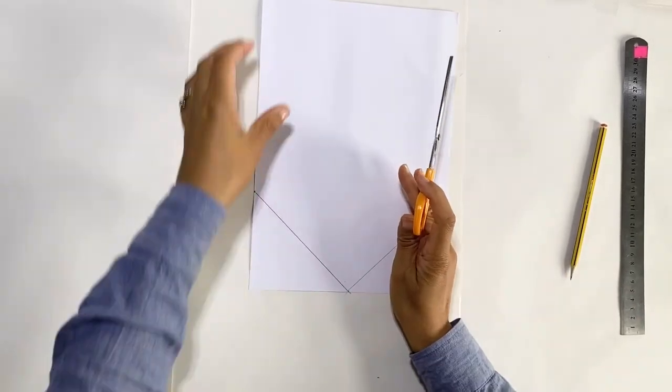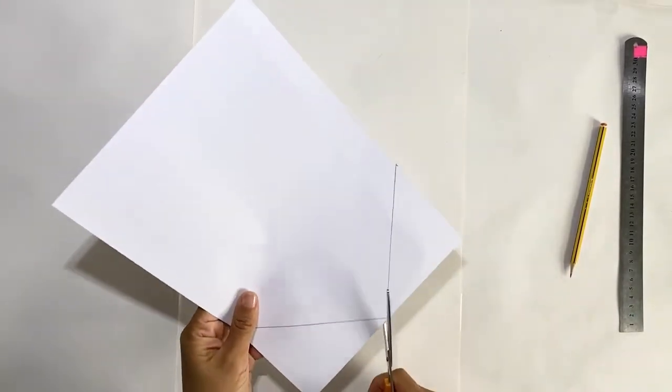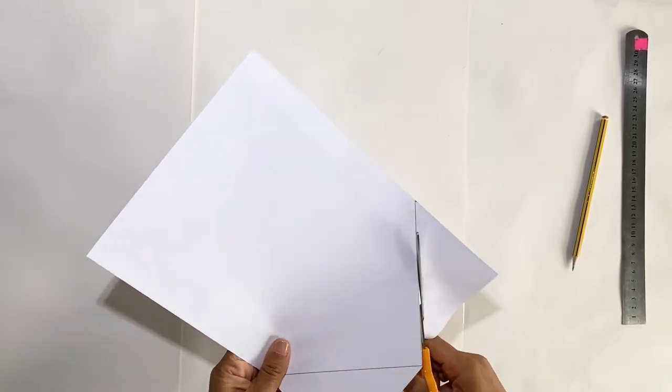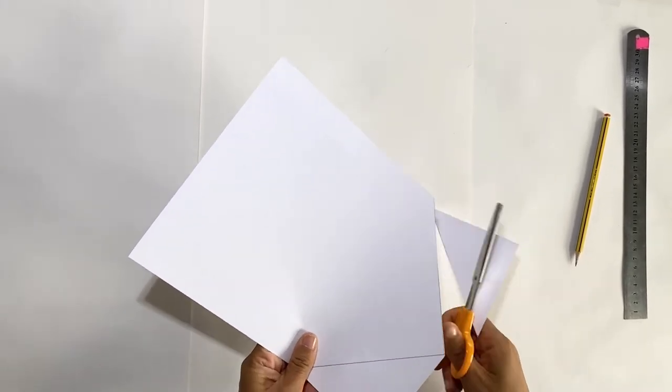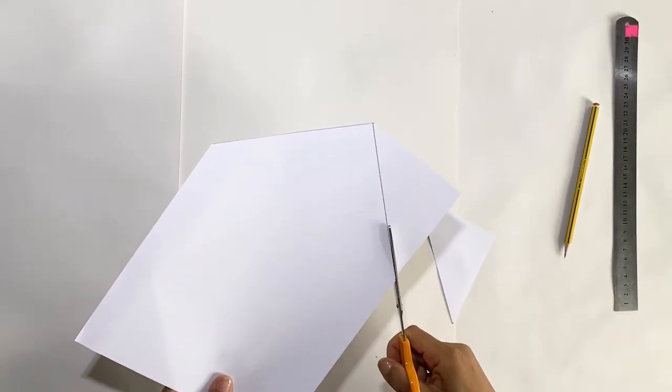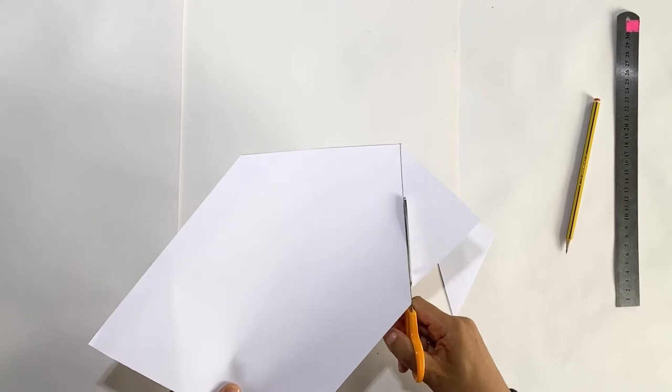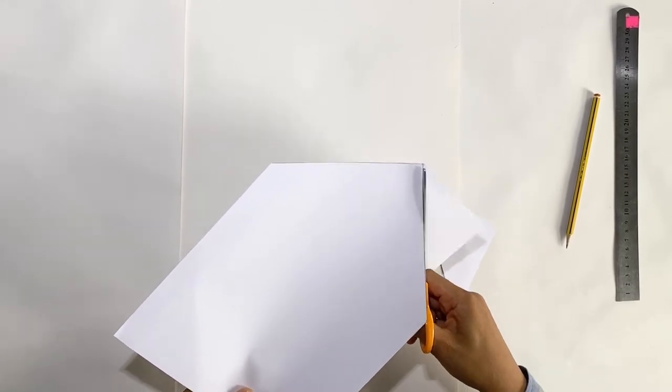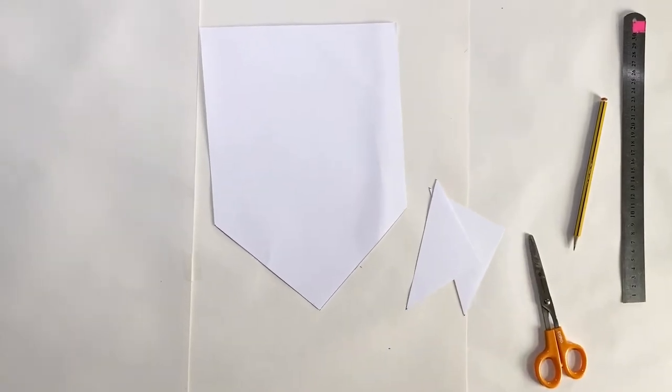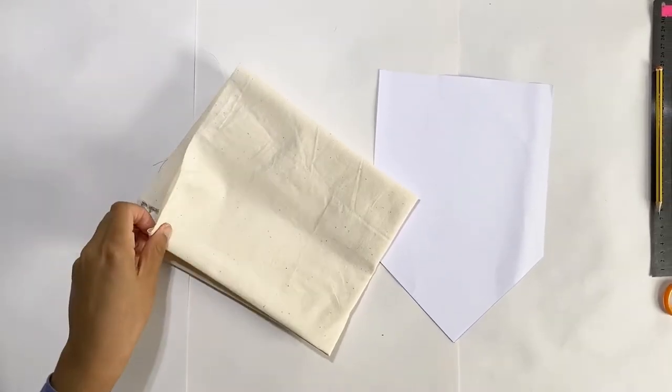So now I'll just cut those two triangles off and now we're ready to use Calico. Calico is a really good surface to print on. But if you don't have Calico, why not try using an old t-shirt? It's a great way to recycle.